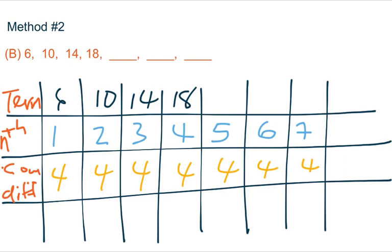Now four times one will give us four, but what we really want is six. Four times two will give us eight, what we want is ten. Four times three is twelve, what we want is fourteen, and so on. So therefore, what we need to get to six, what we need to get to ten, we need to add two.